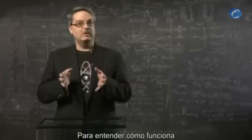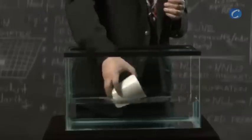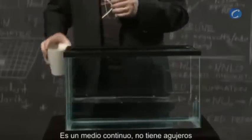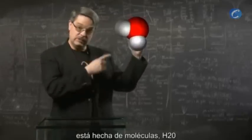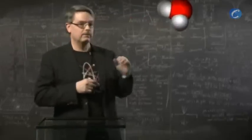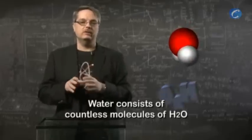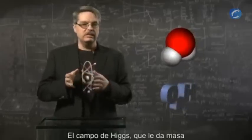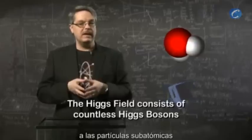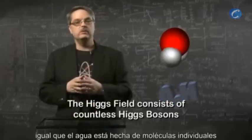To understand how that works, we should again return to water. Everyone knows what water is. If you're immersed in it, you know that water is everywhere — it's a continuous medium and there are no holes in it. We also know that water is made of molecules, specifically H2O. If you hold these two ideas in your head, with the realization that water consists of countless individual molecules, you can now begin to appreciate the Higgs boson. The Higgs field that gives subatomic particles their mass is made of countless individual Higgs bosons, just like water is made of individual molecules.